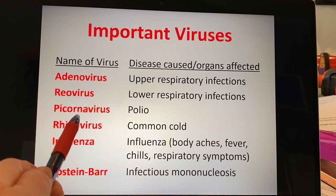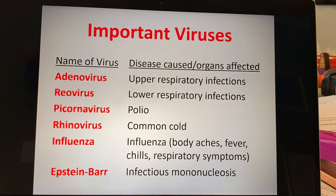Rheoviruses tend to cause lower respiratory infections, and these can be really troublesome to people who have COPD and other comorbidities in terms of lung function. Polio belongs to a class of viruses called picornaviruses — and it has nothing to do with corn. The term pico is a unit of measurement meaning super, super small. That's a picornavirus.